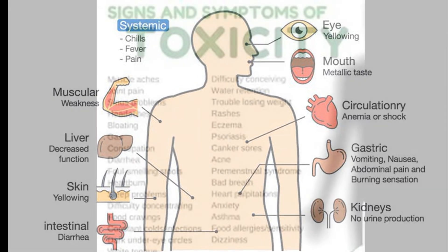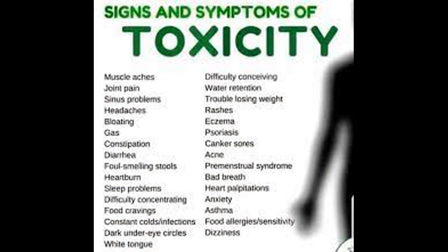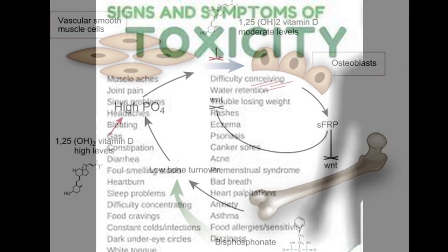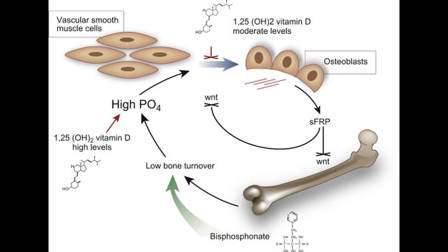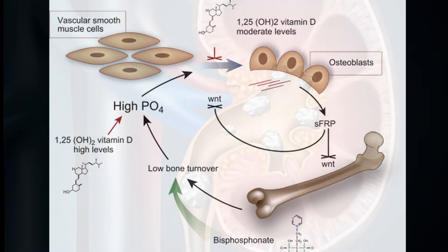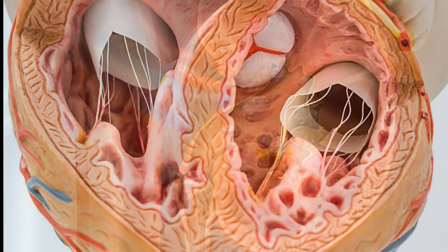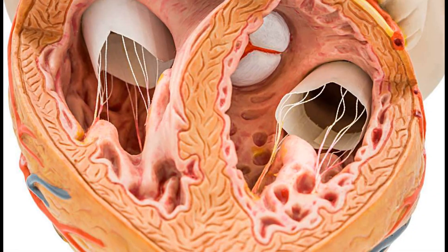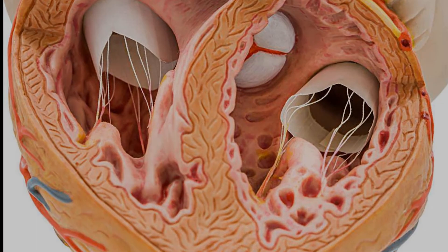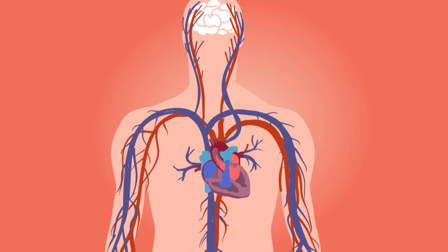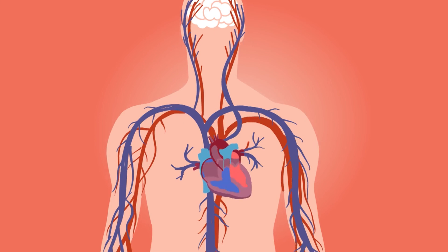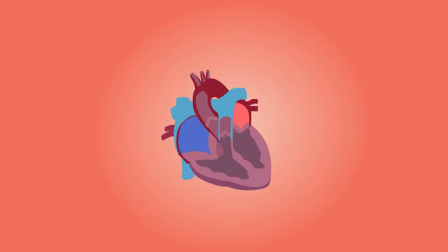Additional symptoms include excessive thirst, weight loss, polyuria, severe itching, muscular weakness, and joint pain. Excessive blood calcium deposits in soft tissues such as the kidney lead to the formation of stones. Calcium may also deposit in the arteries, making them hard. This could be dangerous if it occurs in the arteries of the heart and lungs, leading to death.